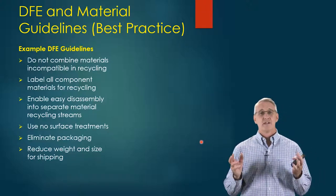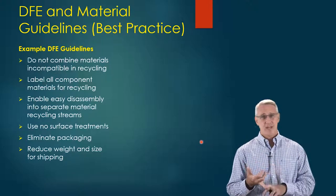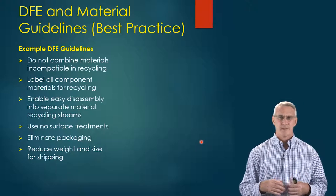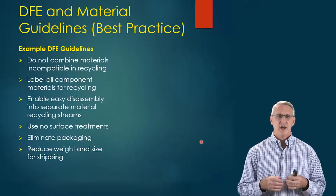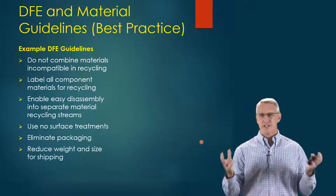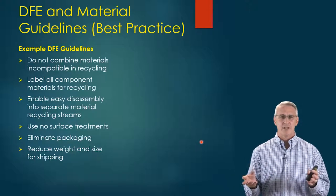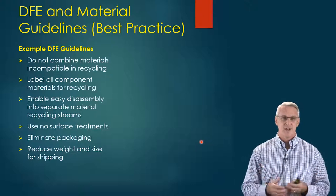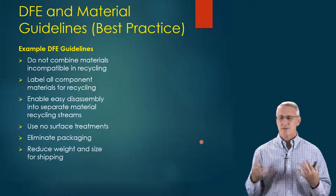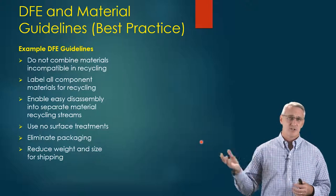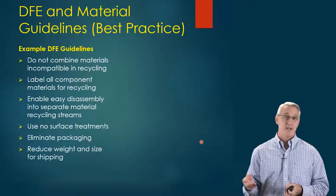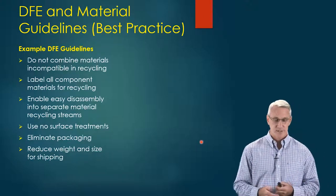Use no surface treatments — coatings, paintings, and things like that — because the more you do that, the harder it is to remove those materials from the underlying material you're coating. Eliminate or minimize packaging, and have the packaging be recyclable itself. There's a whole huge industry in recyclable packaging that's exploded, where everything is recyclable instead of just a fraction of it. Also reduce the weight and size for shipping, because anytime you ship, there's a carbon footprint — particularly shipping by truck, train, or boat. Even shipping can reduce that footprint by going to more electrics, which is what looks like is on the horizon.